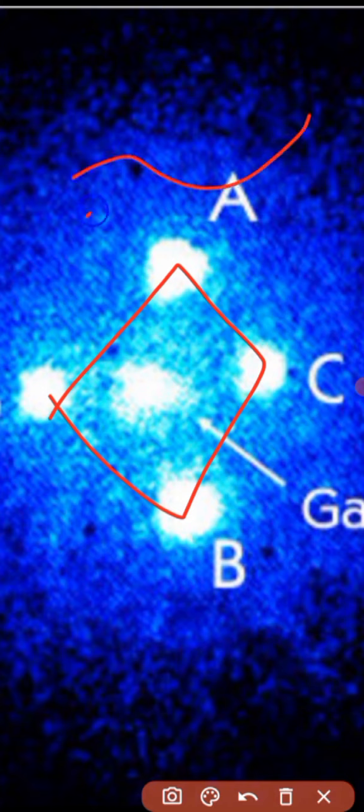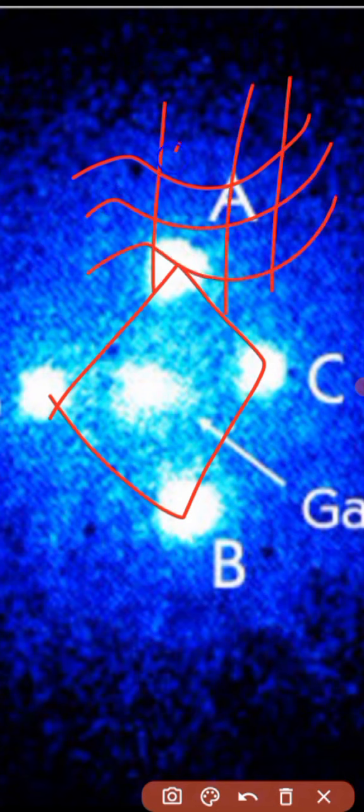You must have seen this type of bend. That's the same light which we consider straight, but this light is bending. Because of this curvature, we can see these structures. This is called Einstein Ring or Einstein Cross.